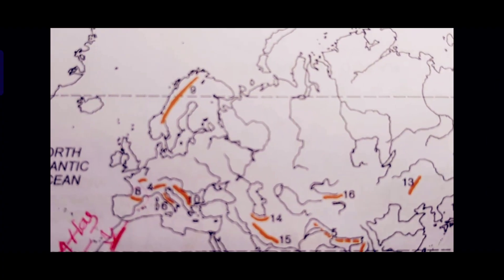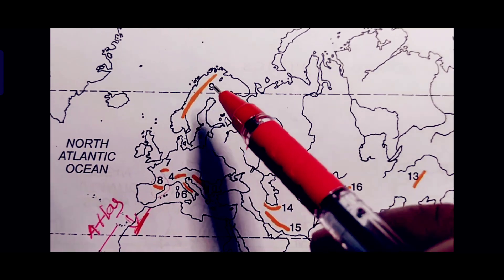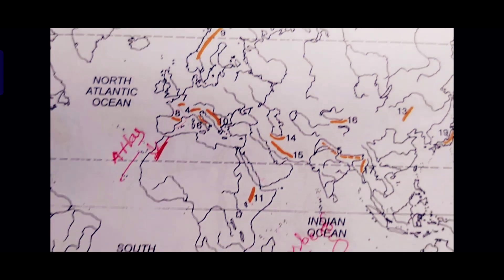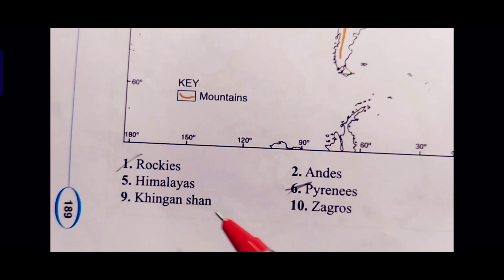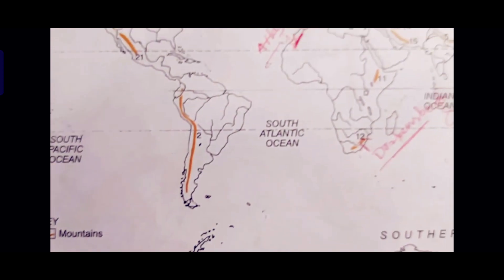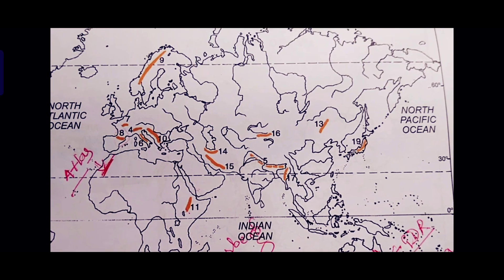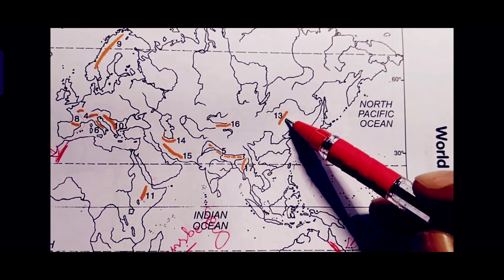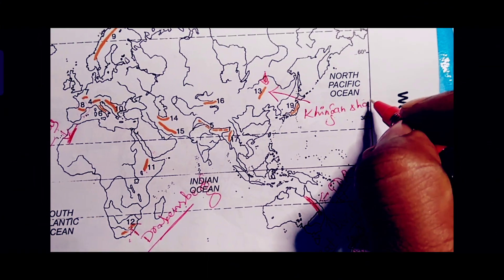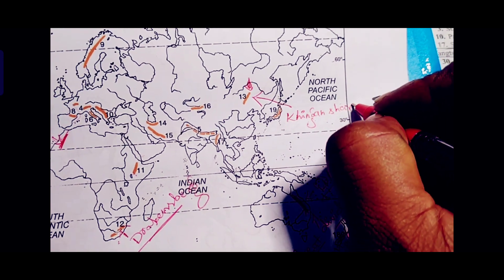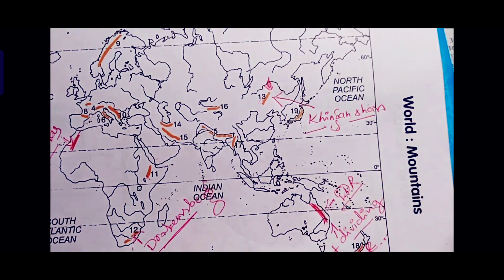Next is number 9, which is marked in the northwest of Europe. In the index, number 9 is the King Hanson Mountain. Actually, the King Hanson Mountain is located in Asia, not in Europe. Number 13 marks the correct location of King Hanson Mountain. Draw a line and label it 'King Hanson Mountain' — so number 13 is the correct location of King Hanson Mountain.